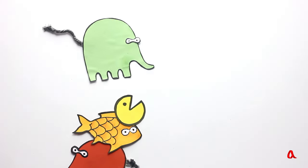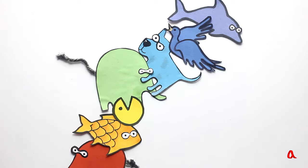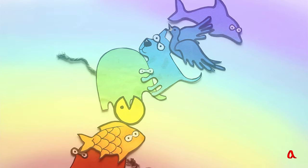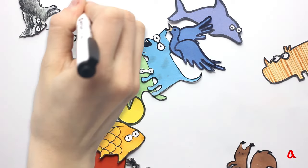Richard of York gave battle in vain. Everyone is familiar with this mnemonic aid sentence, encoding colors of the rainbow. Why are the colors always arranged in this particular order?